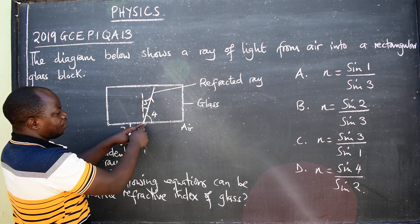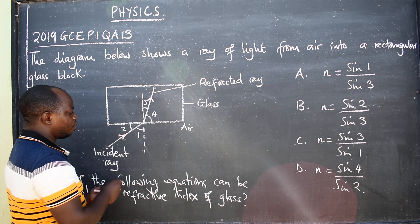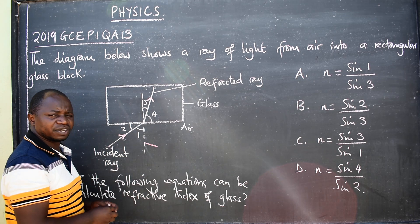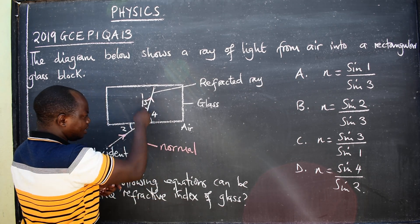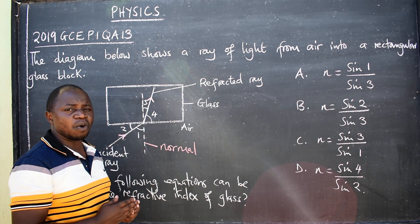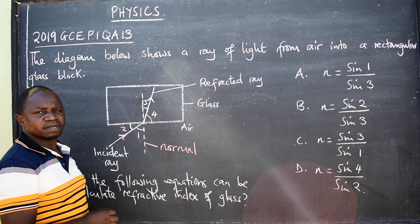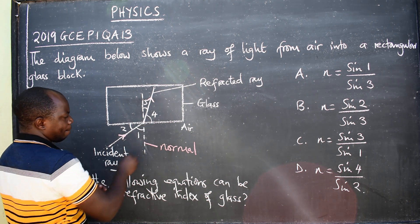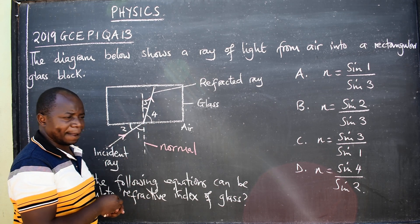At this point you need to draw what we call the normal. This dotted or broken line that we are seeing here is called the normal. It should be drawn at 90 degrees, perpendicular to the glass block. It must be at 90 degrees. Now there will be a lot of angles formed here.